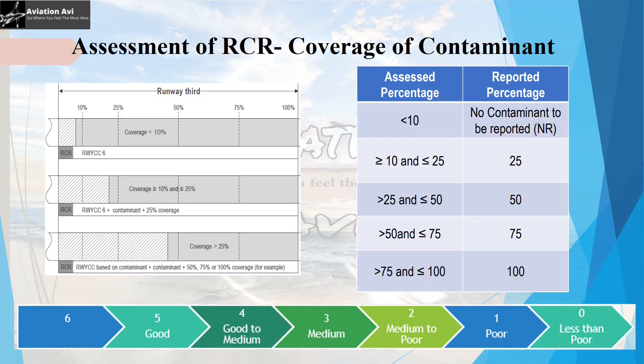Now that we have divided the runway into three equal parts and assigned a runway condition code to each third, it is time to assess the coverage of contaminant. If coverage is less than 10%, the reported coverage is R. If coverage is between 10–25%, it is reported as 25. If between 25–50, it is reported as 50. If between 50–75, it is reported as 75, and if between 75–100, it is reported as 100.